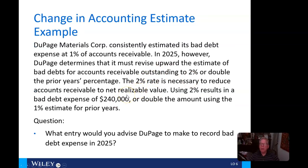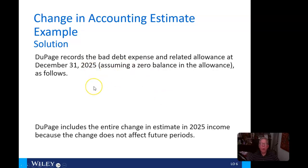DuPage Materials consistently estimated its bad debt expense at 1% of accounts receivable. In 2025, however, they determined they must revise that upward to 2% — double the prior year's percentage — because 2% is necessary to reduce accounts receivable to its net realizable value. Using 2% results in bad debt expense of $240,000, double the $120,000 under the 1% estimate. They will record the bad debt expense and related allowance at December 2025, assuming a zero balance in the allowance.